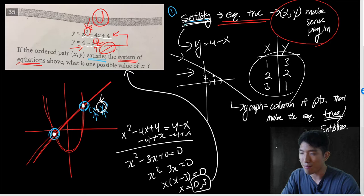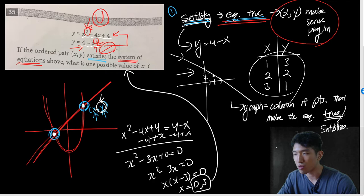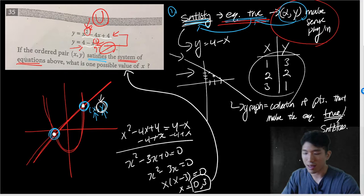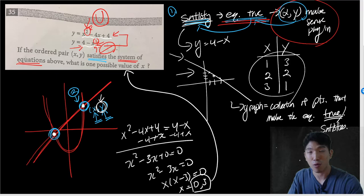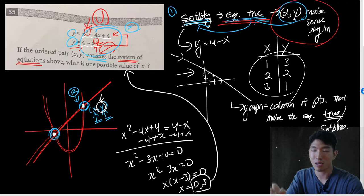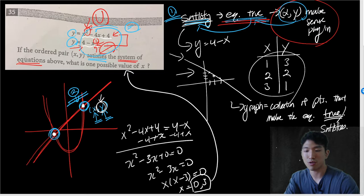A couple of things you really need to know here: first, understand what it means to satisfy the equation — it means the coordinates make the equation true. Second, to find a point that satisfies both equations, look for the intersection, because at the intersection they share the same X and Y coordinate. If you understand these two things, you're good to go whenever you see a variation of this question.